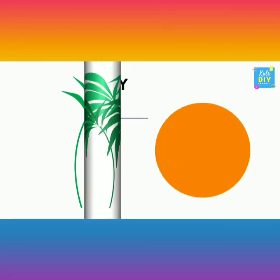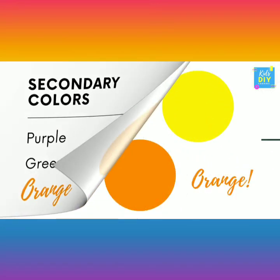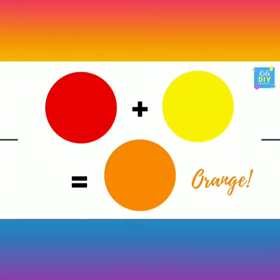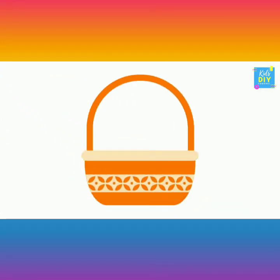The next secondary color is orange. By mixing red and yellow color, we get orange. The carrot is orange. The basket is orange.